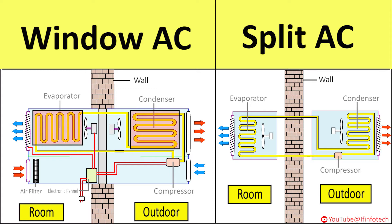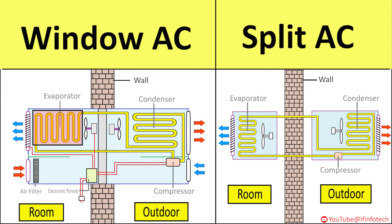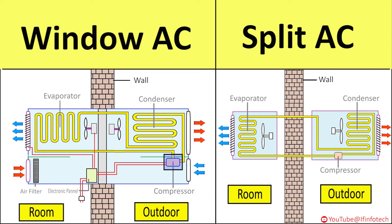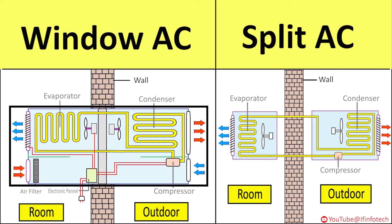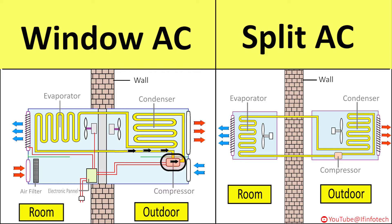The condenser is connected to the evaporator by capillary tube. The evaporator is connected to the compressor by suction pipeline, and the compressor is connected to the condenser by discharge pipeline. In window AC, a simple vapor compression refrigeration system is used. The low pressure, low temperature refrigerant vapor is sucked by the compressor, compressed to high pressure and high temperature, and discharged to the condenser.